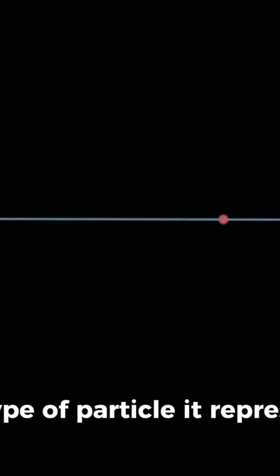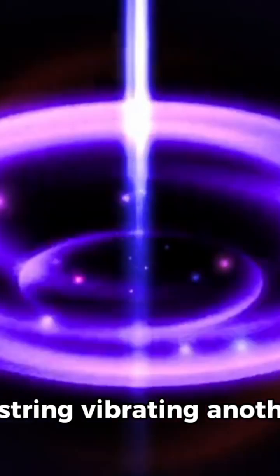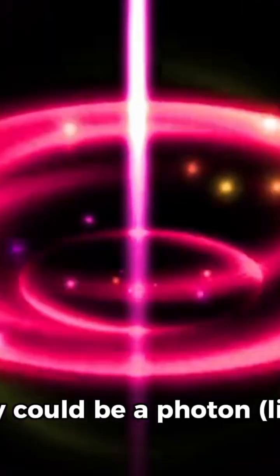The way a string vibrates determines the type of particle it represents. For example, a string vibrating one way might be an electron, while a string vibrating another way could be a photon, a light particle.